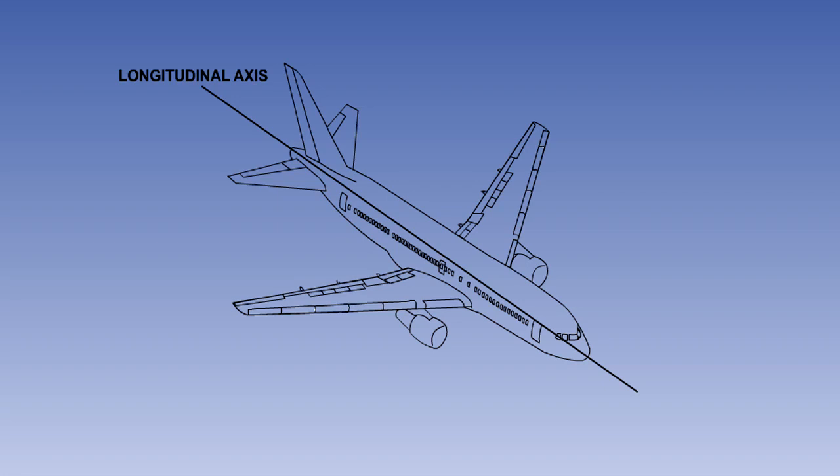In this lesson, we will discuss the various ways in which lateral control about the longitudinal axis of the aircraft is achieved.